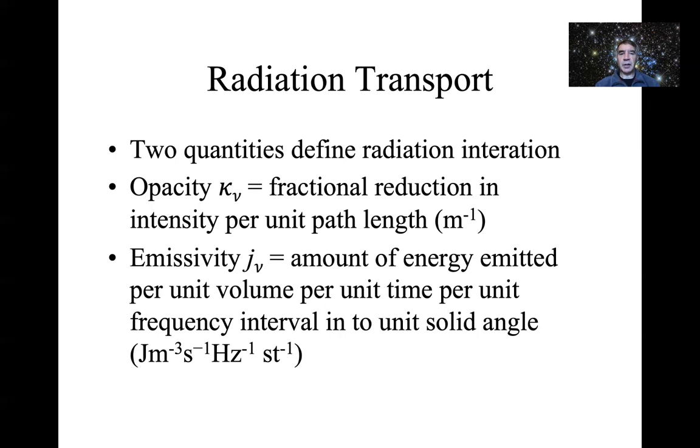We need to define a couple of quantities which are key to this interaction. We've already met this idea of opacity. I'm going to define it as kappa nu, so nu standing for frequency here. Kappa is opacity and nu means it's a function of frequency, which clearly it will be. It's defined as the fractional reduction in intensity per unit path length, so it has dimensions or units of per meter. There are other ways of defining this quantity that you will see in textbooks. Sometimes it's multiplied by the density to give you an absorption cross section, so it'll appear as meter squared per kilogram. There are different ways of defining it, but this is how I'm going to define it here.